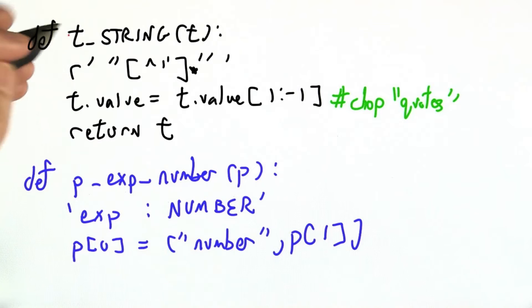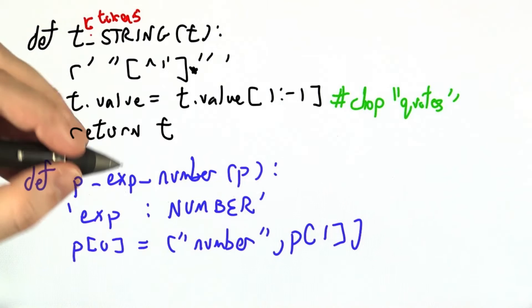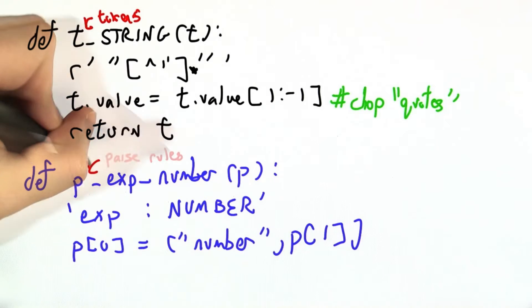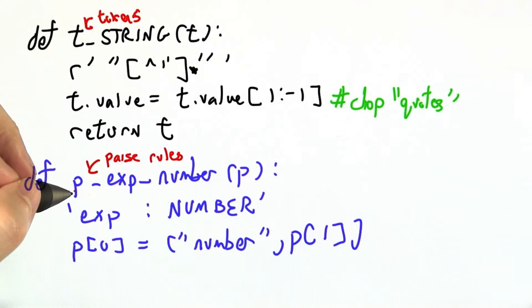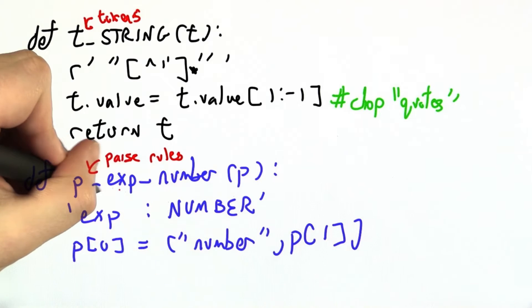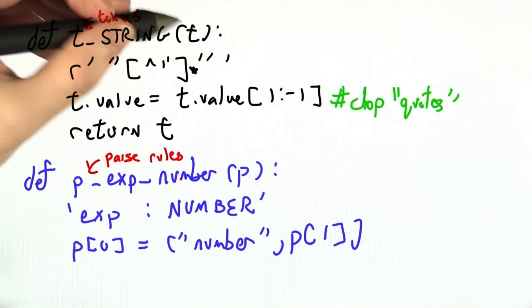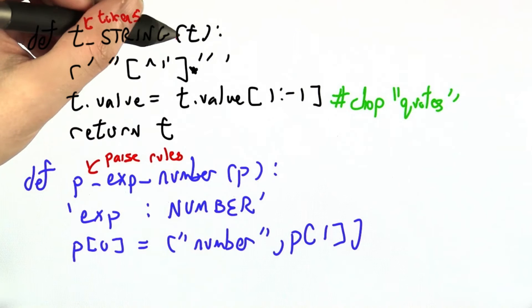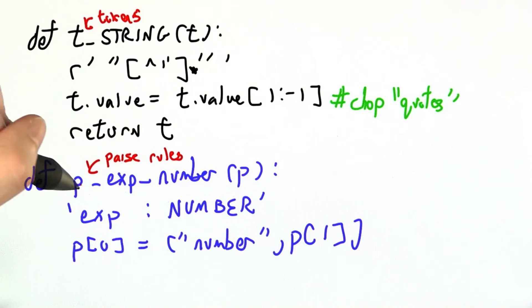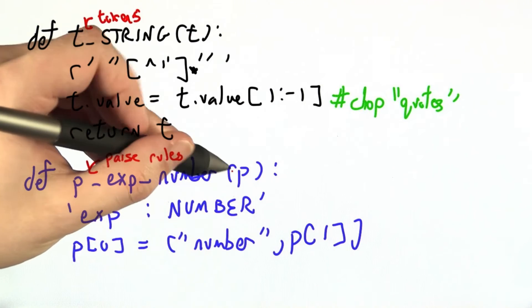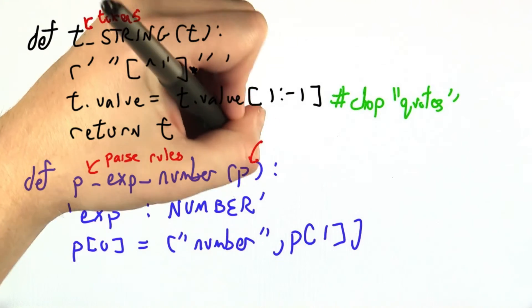For tokens, we used a T underscore to mean I'm defining a rule for a token. For parsing rules, we're going to use a P underscore to define the name of a parsing rule. And then here, just to help us out, we're going to write down what the left-hand side of the rule is. This is how you parse an expression when that expression is a number.